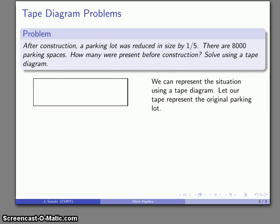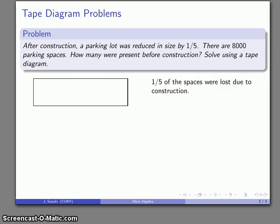So let's go ahead and draw that. We can represent the situation - well, here's our parking lot. And we're going to lose one-fifth of those spaces. So we'll divide our parking lot into five pieces, and we'll lose one-fifth of them. So those are gone, you can't park there, but you can park in the remaining spaces here.